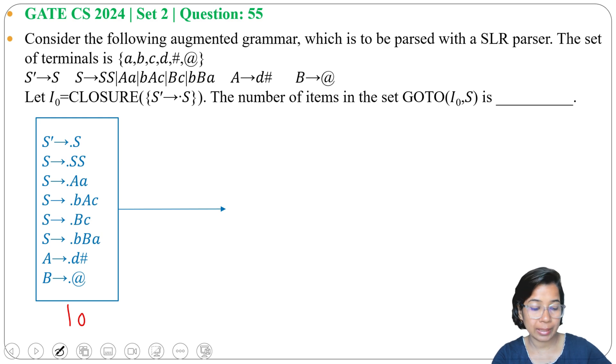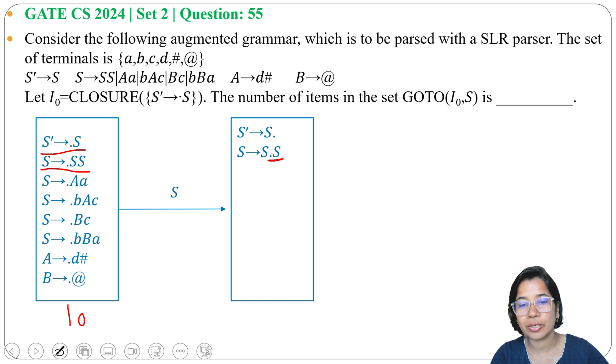the number of items in that set. So I₀ by S, we are going to another state: S' → S•. That will be our first production. Here dot was before S, now dot is after S. Next production: S → S•S. As dot is before S, that's why we need to write all S productions, so we